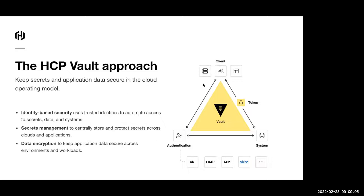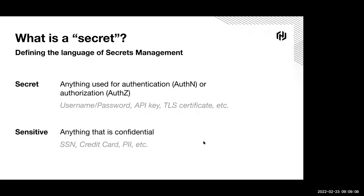We've talked a lot about secrets. So what is a secret? It could be usernames, passwords, API keys, SSL certificates. There's also a lot of sensitive data that companies are dealing with — say you're a hotel chain dealing with passport numbers, credit card numbers, all sorts of PII data. So Vault actually handles both secrets and sensitive data.